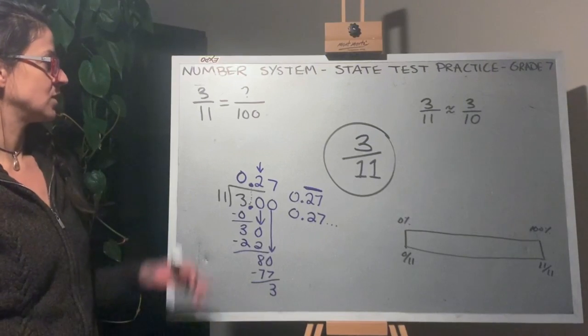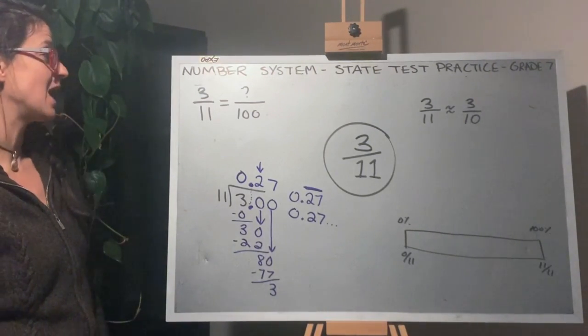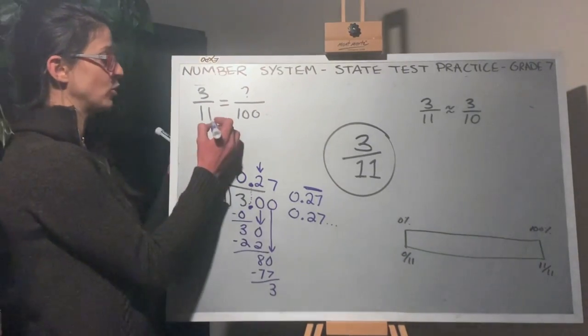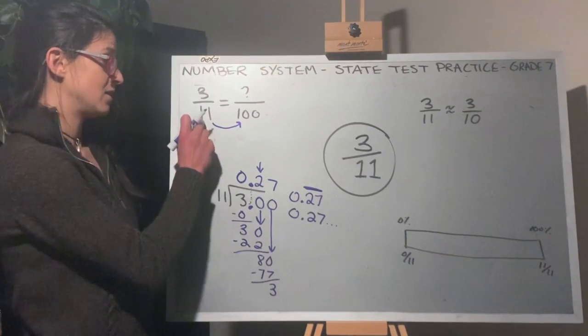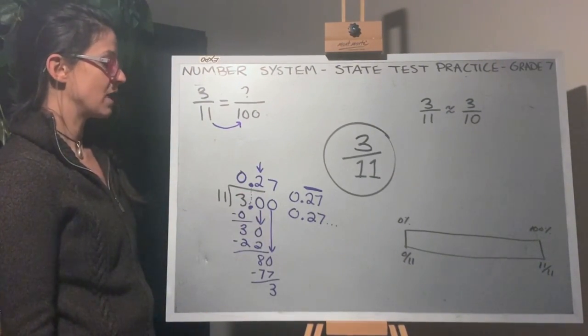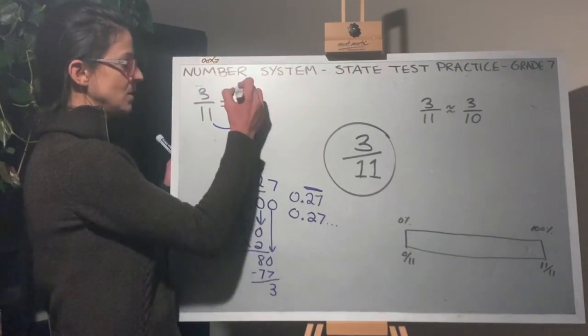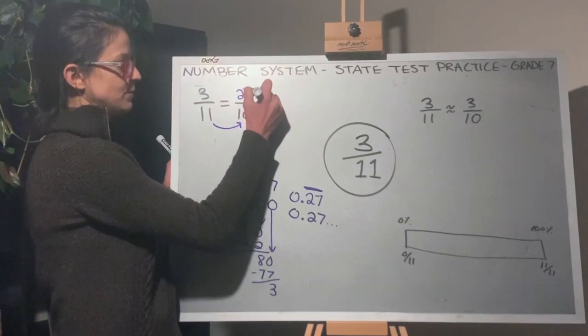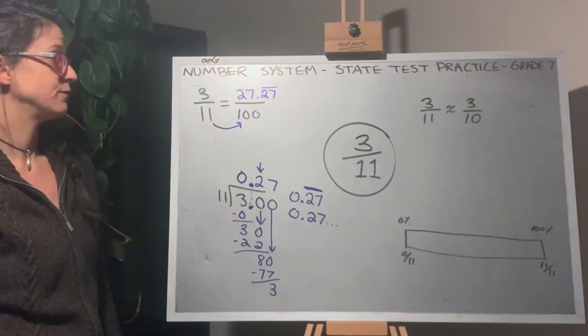Now what does that look like in a proportion? Well, when it's repeating, it's not going to be a very nice proportion because there's not a simple number that multiplies 11 to get 100. So if we did do this, it would end up being 27.27 repeated in a proportion form.